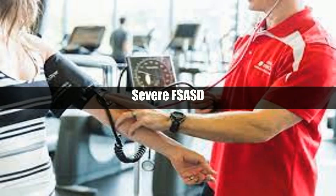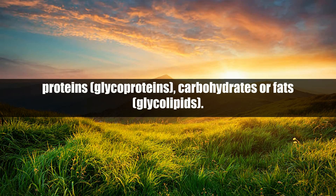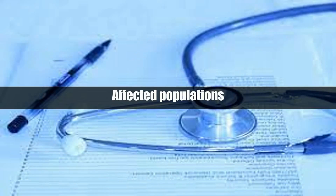FSASD is caused by changes, or variants, in the SLC17A5 gene. Sialic acid is a charged sugar produced when lysosomes break down certain sugar-containing proteins — glycoproteins — carbohydrates, or fats known as glycolipids.